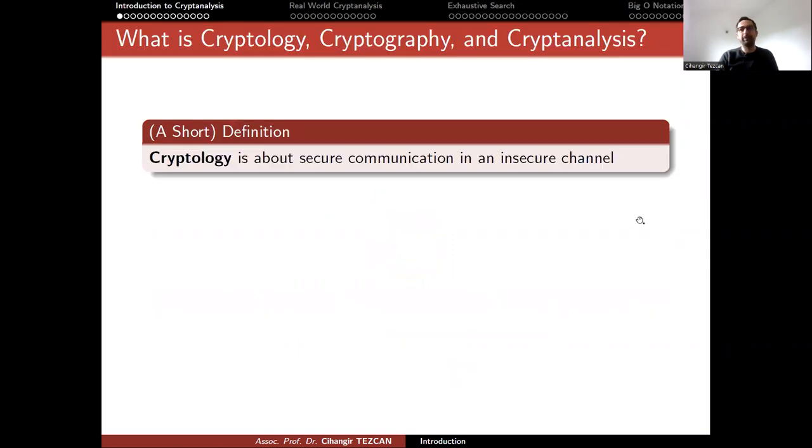So let's start with and remember the definitions. Cryptology is the art and it is about secure communication in an insecure channel, if you want to give a short definition. But actually it covers a lot of different areas today, from post-quantum cryptography to zero-knowledge protocols, homomorphic encryption, randomness, it has a lot of topics.